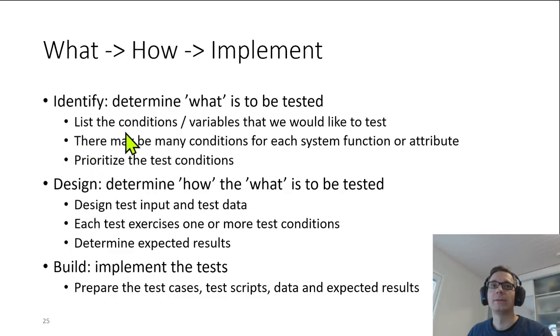We need to list the conditions or some would call these test variables that we would like to test. We need to understand that there might be many conditions and many variables for each system function or each system quality attribute we need to test. And we should also prioritize these test conditions or test variables.